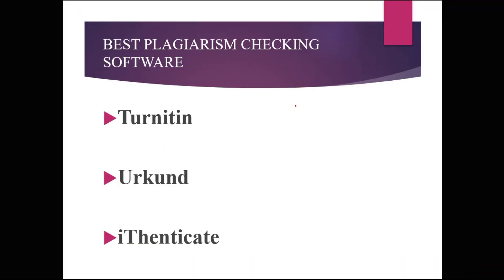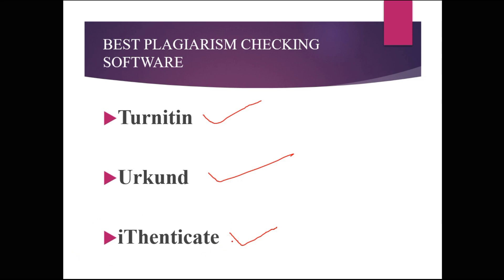These are the three important plagiarism checking tools: Turnitin, Urkund, and Authenticate. You can use Urkund but it requires an institutional login — if your university or college has the login you can make use of it. Many Indian universities use Urkund to check your research paper.